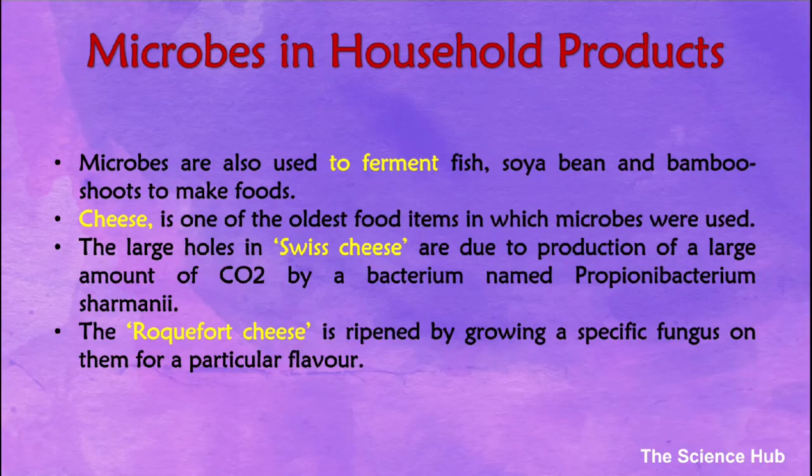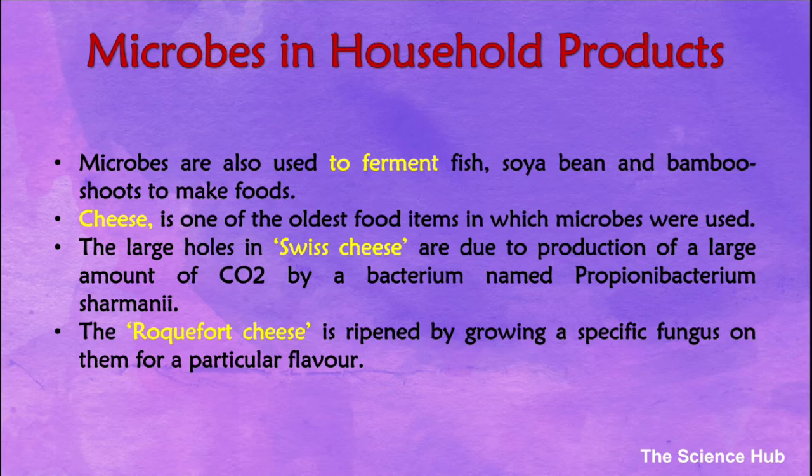Cheese is one of the oldest food items in which microbes were used. The large holes in Swiss cheese are due to the production of a large amount of CO2 by a bacterium named Propionibacterium sharmani. Roquefort cheese is ripened by growing a specific fungus on it for a particular flavor.